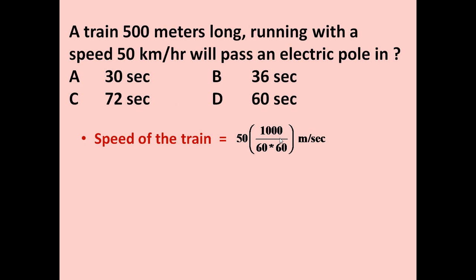So 50 into 1000 divided by hour. Hour means 60 minutes, and in each minute 60 seconds are there. So divide by 60 minutes into 60 seconds. So it will become meter per second. Now if we simplify this we get 125 upon 9 meter per second. So this is the speed of the train in meter per second.